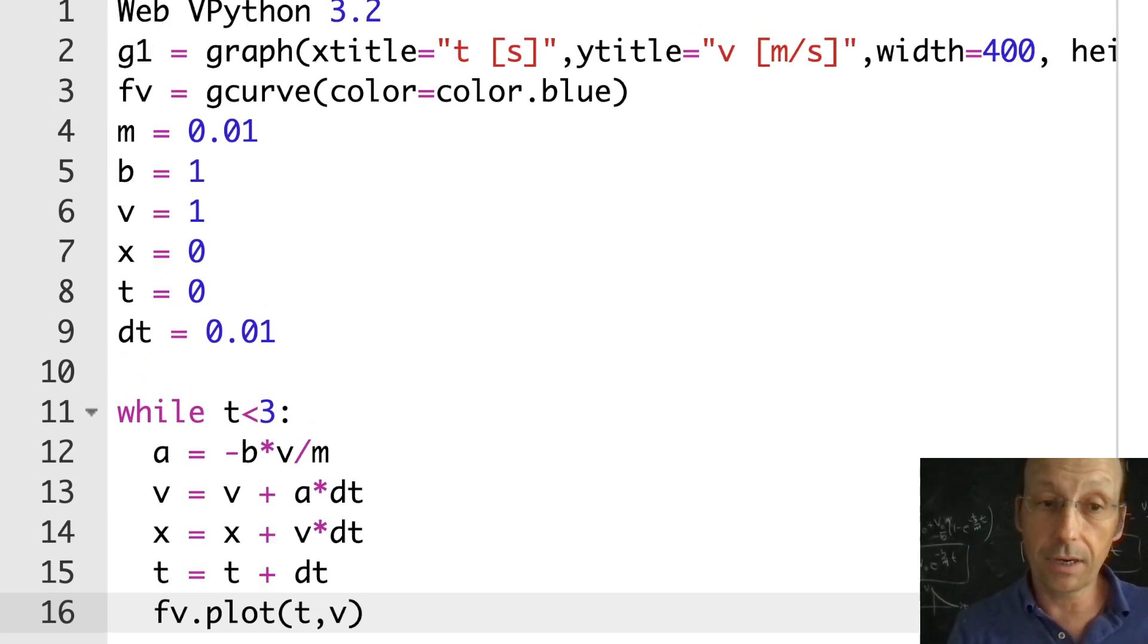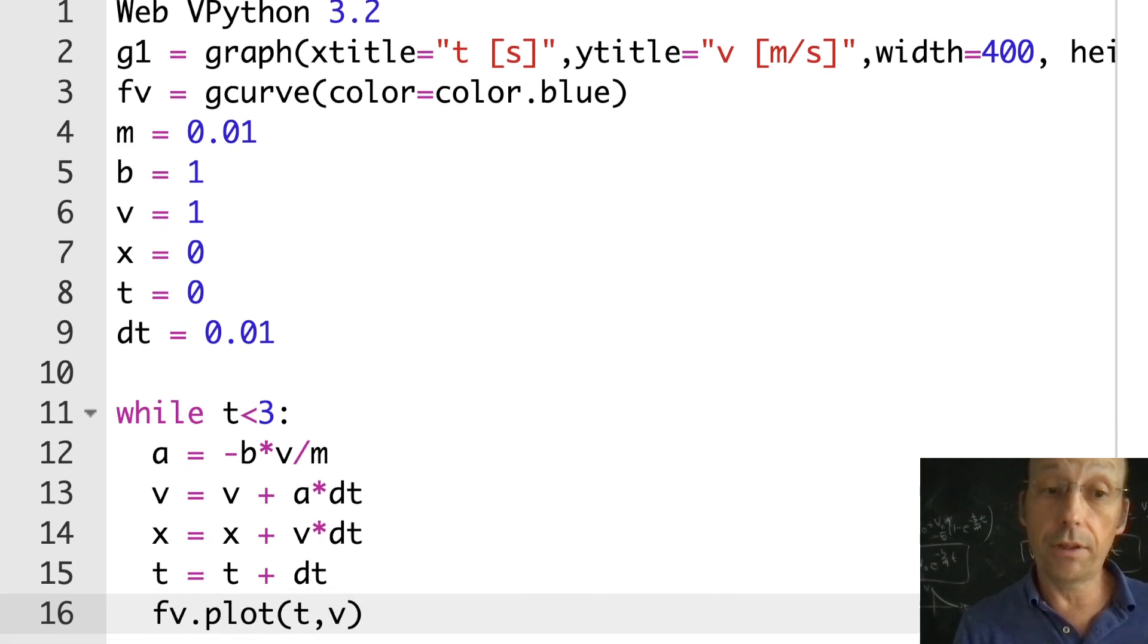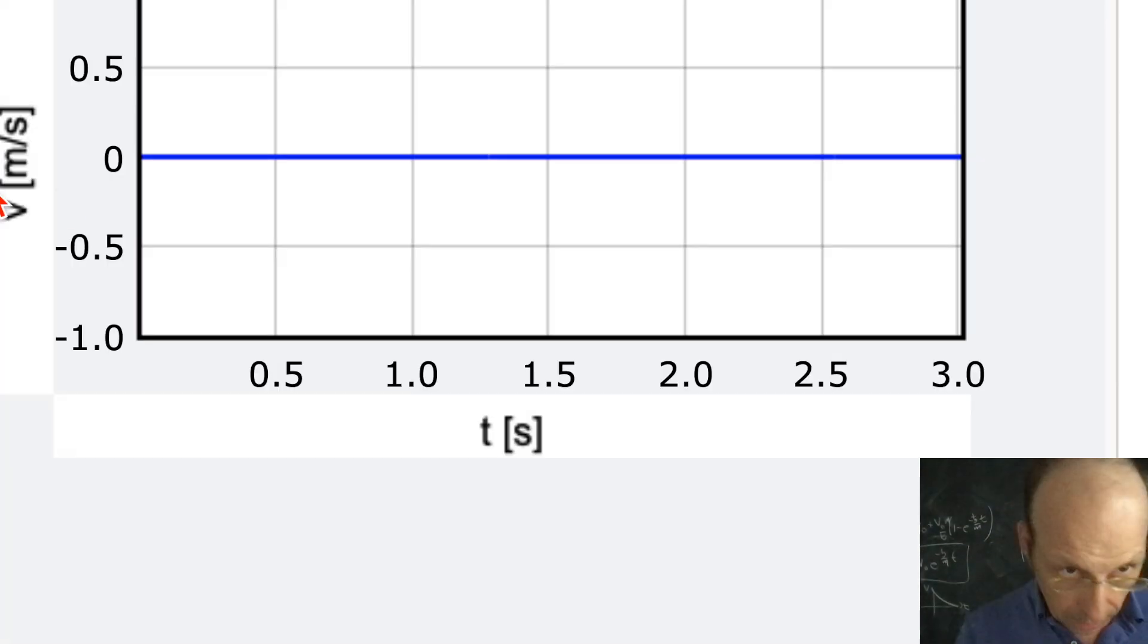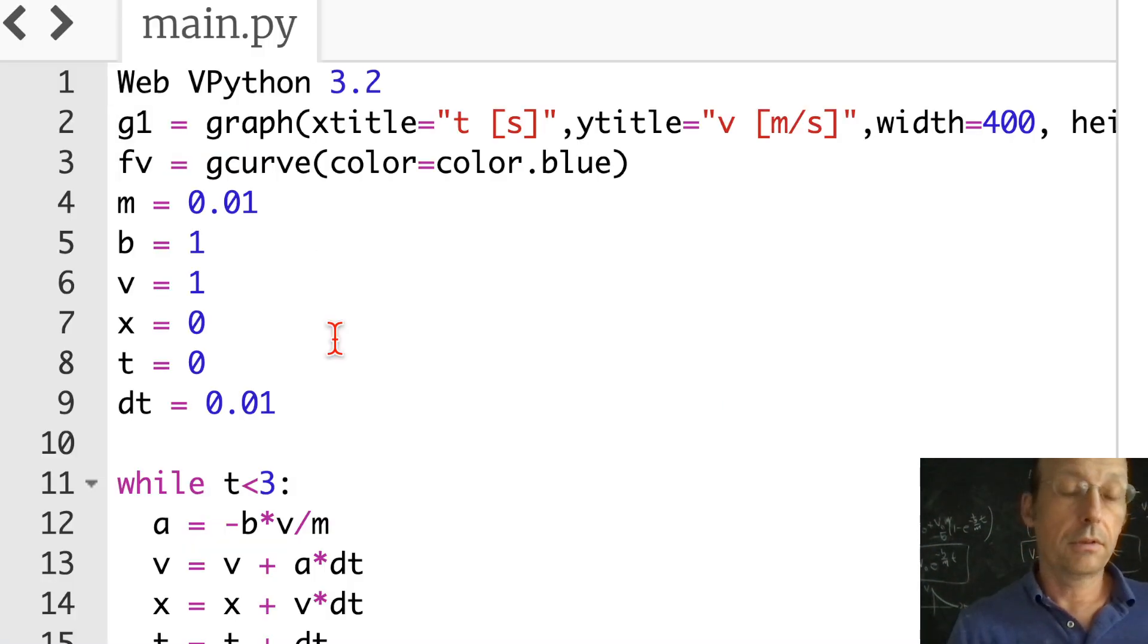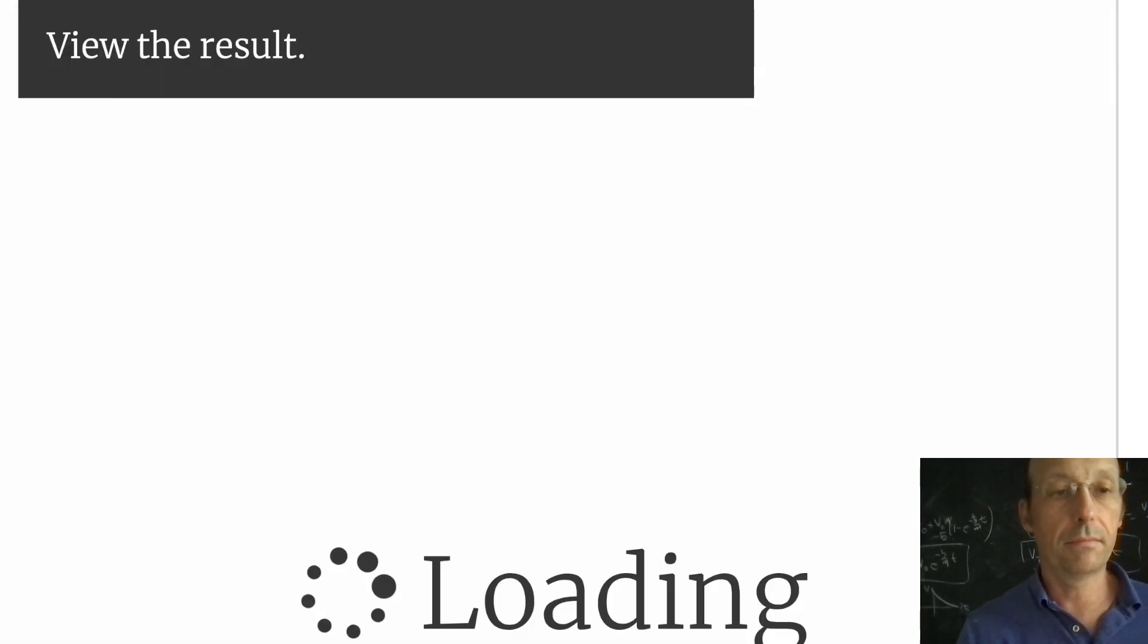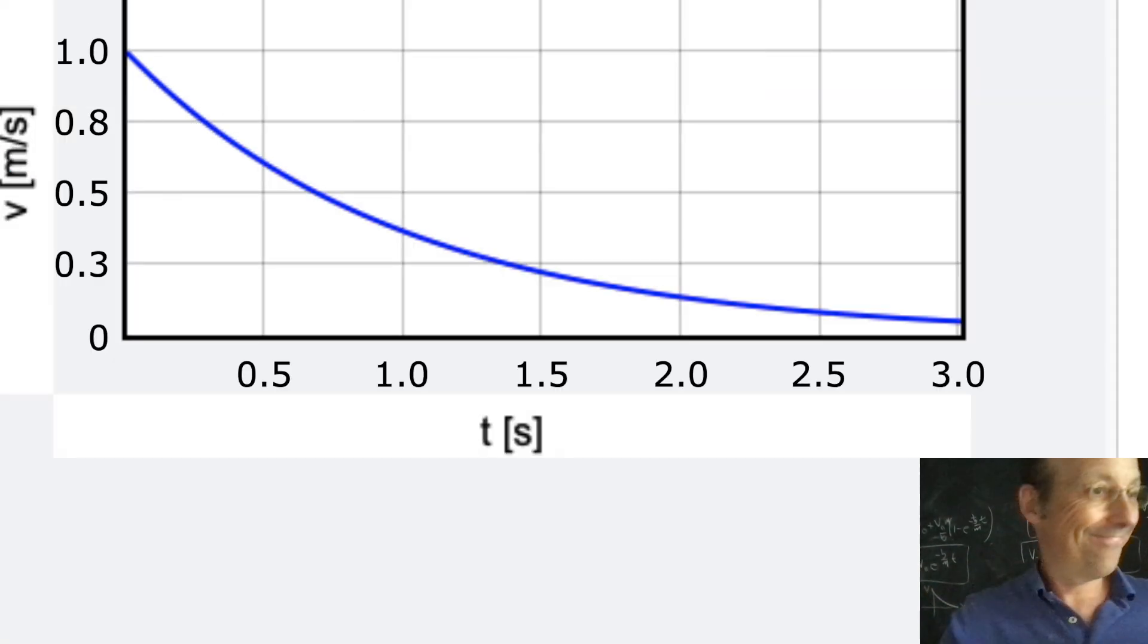That's pretty simple code there. I think it stopped too soon. Let's make b equal 0.01. There we go. Check that out. It worked perfectly. It does what we expect.